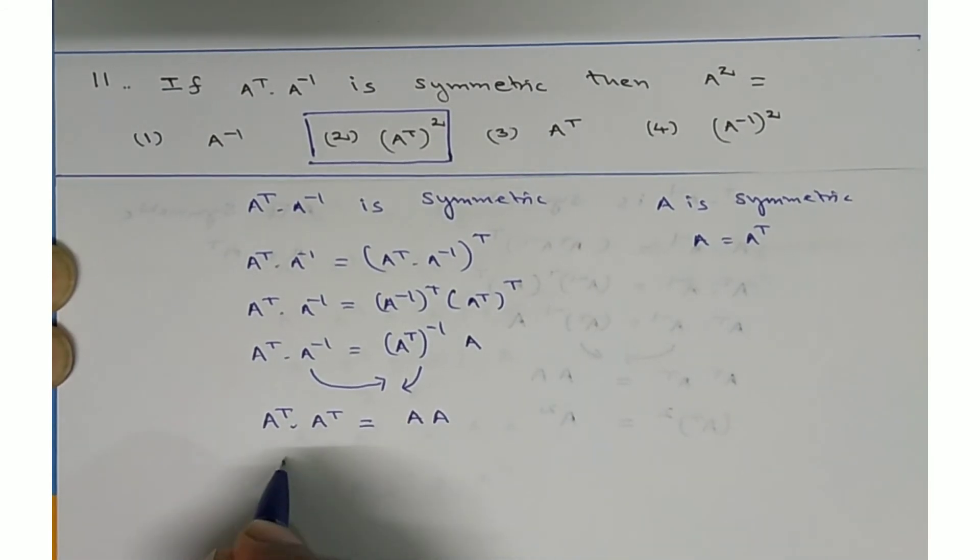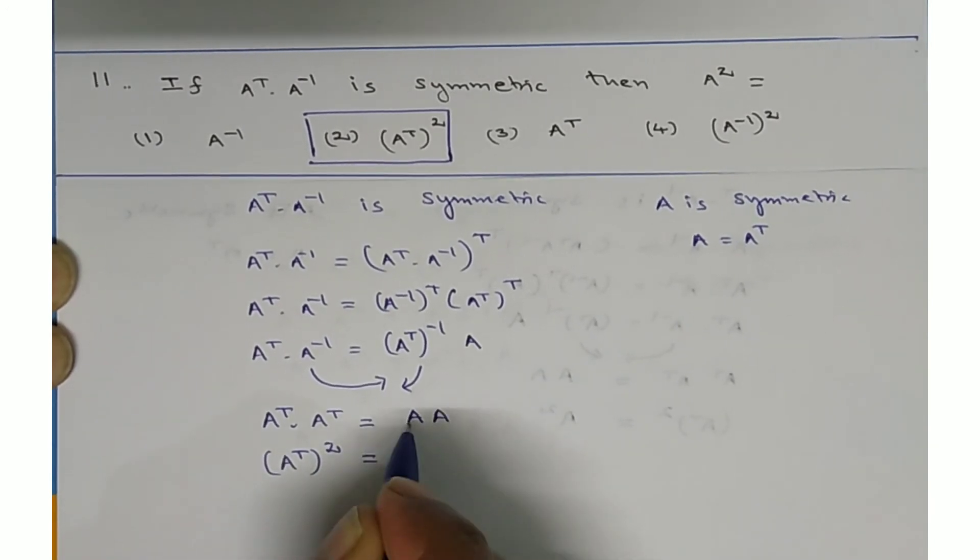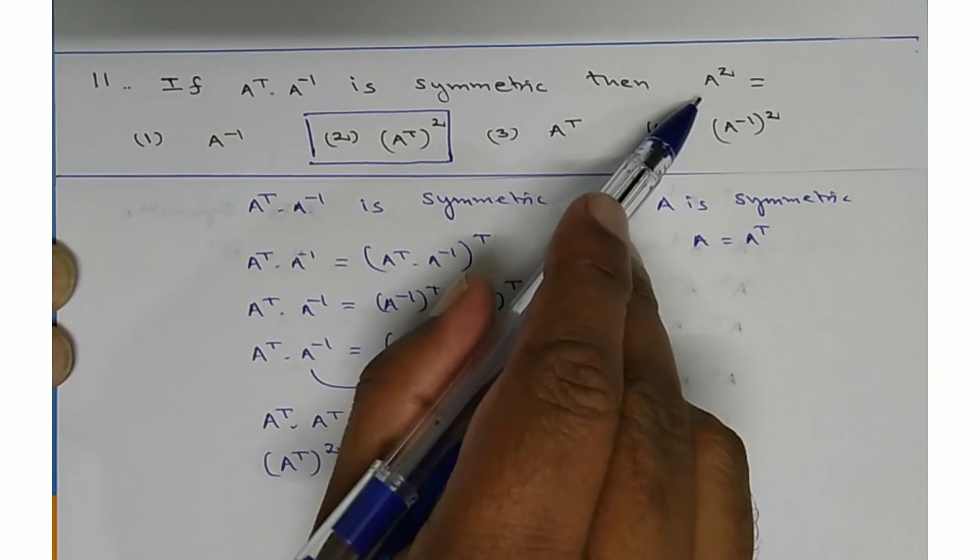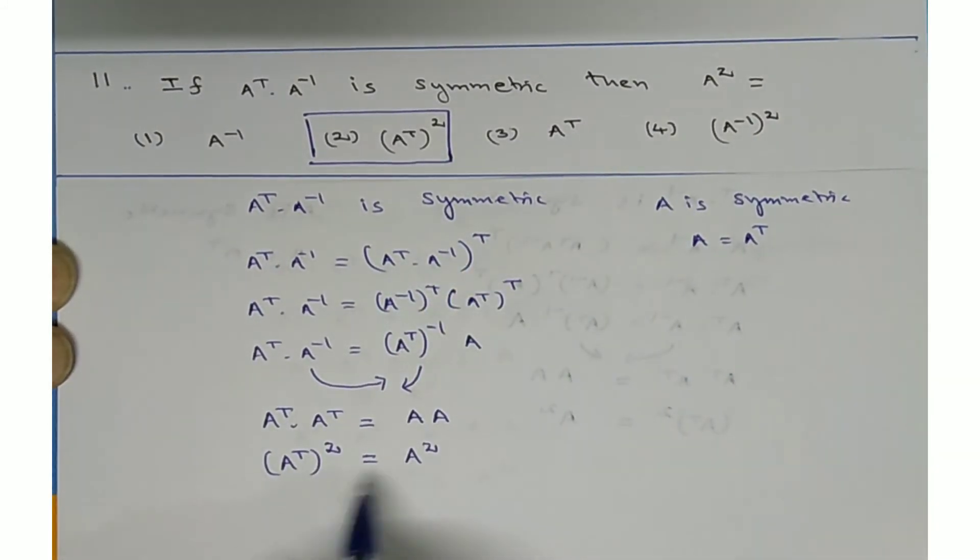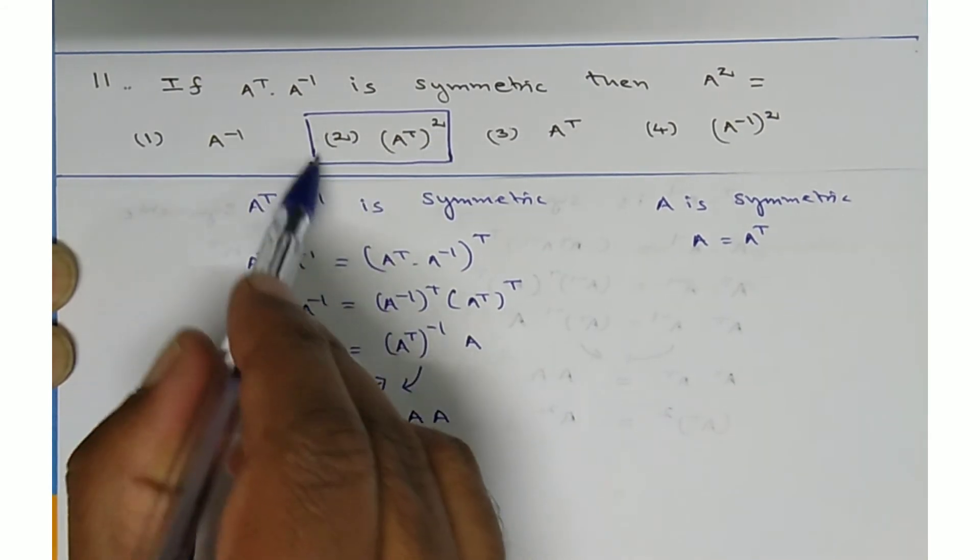So, A transpose into A transpose, A transpose the whole square is equal to A into A is A squared. So, here what is the question? What is A squared? A squared is A transpose the whole square. So, A transpose the whole square is second option. This is the correct one.